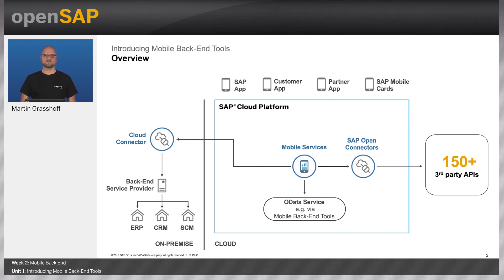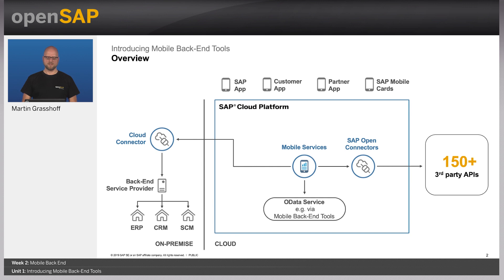We have discussed the general architecture of mobile solutions. You have mobile services usually in the middle of this universe — in this situation, it's SAP Cloud Platform. You have the applications on top, and you connect to various backend systems. During our course, we will use our own backend system that runs directly on SAP Cloud Platform, and we will create this backend using the mobile backend tools, which comes as part of the mobile services.